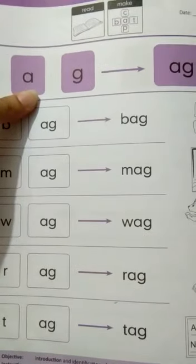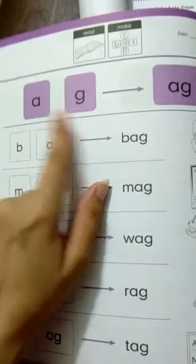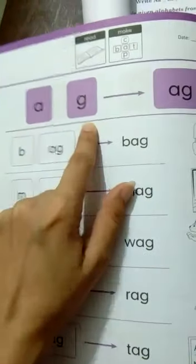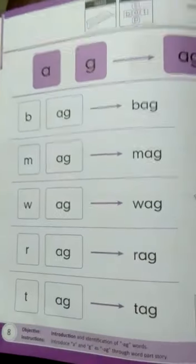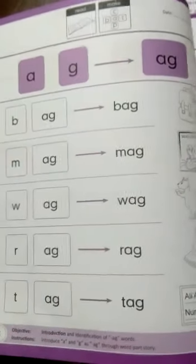Sab se pehle, kis words ko hum padhengi? A, g, ag. Ag, g, ag, g, ag. Ag, g, ag. Ag humara phonic word hai. Hum aaj is ki drill karengi.